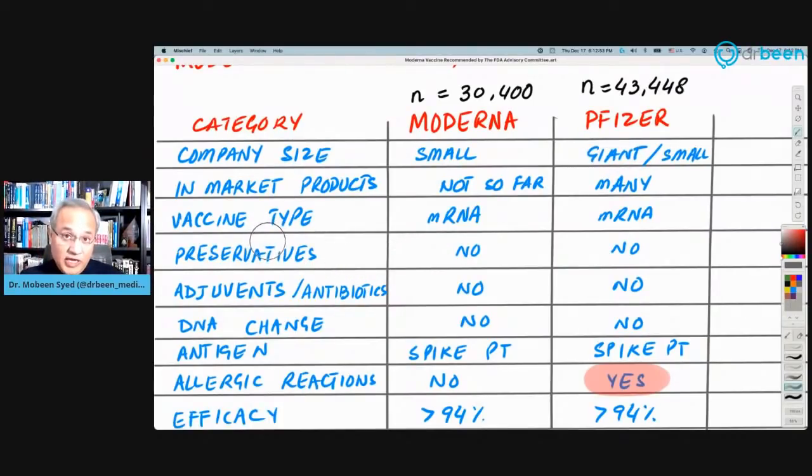Do they have products in the market? So Moderna does not have any product in the market so far. They have many RNA-based vaccines, but none of their vaccine has become approved or has gone out even to phase three. This is their first vaccine that has gone through the phase three. And today you're seeing that it is recommended for approval as well. I think by Friday they will be approved too. Of course, Pfizer has many products already in the market. Vaccine type: They both are messenger RNA vaccines.